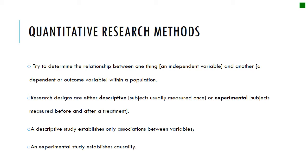When we're using quantitative research methods, we're trying to determine the relationship between one thing and another — for example, the relationship between smoking and being in university, or the relationship between smoking and owning a dog. Research designs can be either descriptive or experimental. With a descriptive study you're only talking about the relationship between the variables, but with an experimental study you're also identifying the causality — why these things relate to each other.